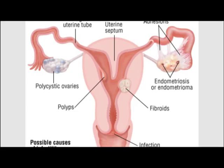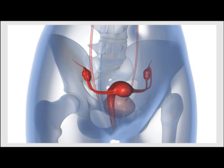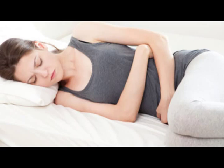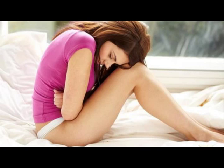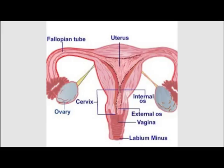In Ayurvedic terms, the monthly menstrual release is associated with the motion of apana vayu — the sub-dosha of vata associated with downward movement. Ayurvedic treatment views amenorrhea as a condition of vata imbalance. Women with amenorrhea will likely experience an increase in the qualities of dry, cold, light, and mobile, and should alter their diet to concentrate on warm, moist, and heavy foods.